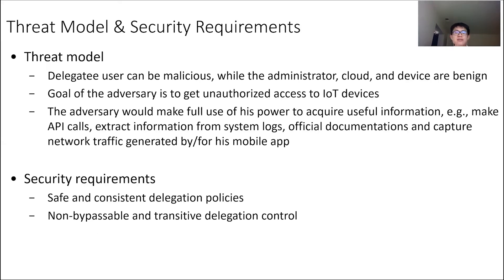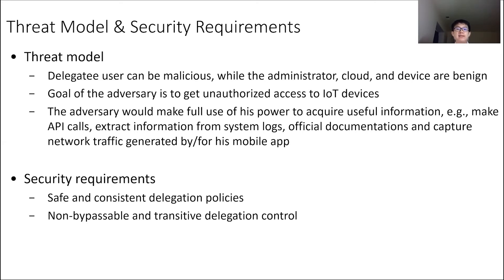To this end, we consider a threat model where the delegated user can be malicious, aiming to gain unauthorized access to IoT devices, while the IoT clouds, the devices, and the administrator are unaware. We also assume the adversary is capable of extracting information from system logs, official documentations, and network traffic between the IoT clouds and his mobile phone. Throughout this talk, we call the party delegating access rights the delegator and the recipient the delegatee. A delegator could be a delegator user or a delegator cloud, and the delegatee could also be a delegatee user or a delegatee cloud.